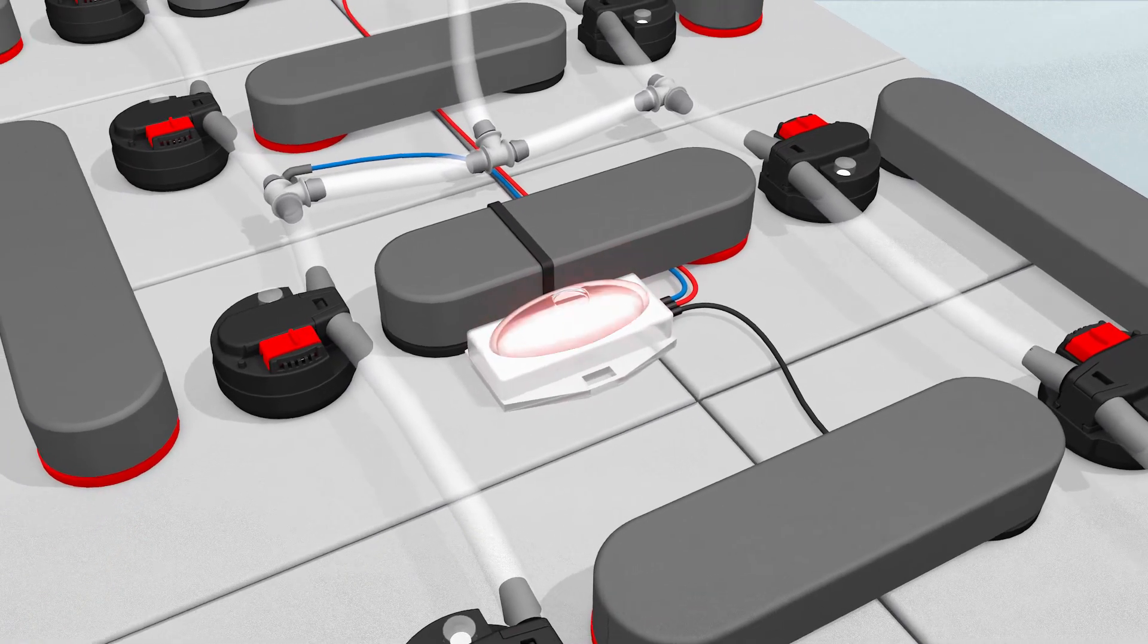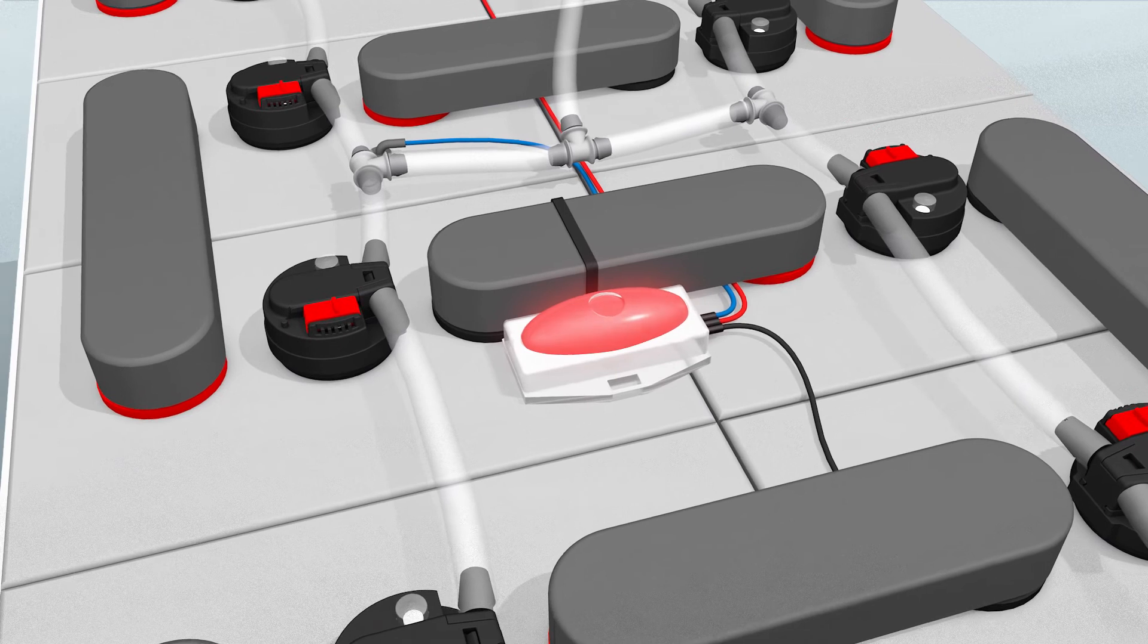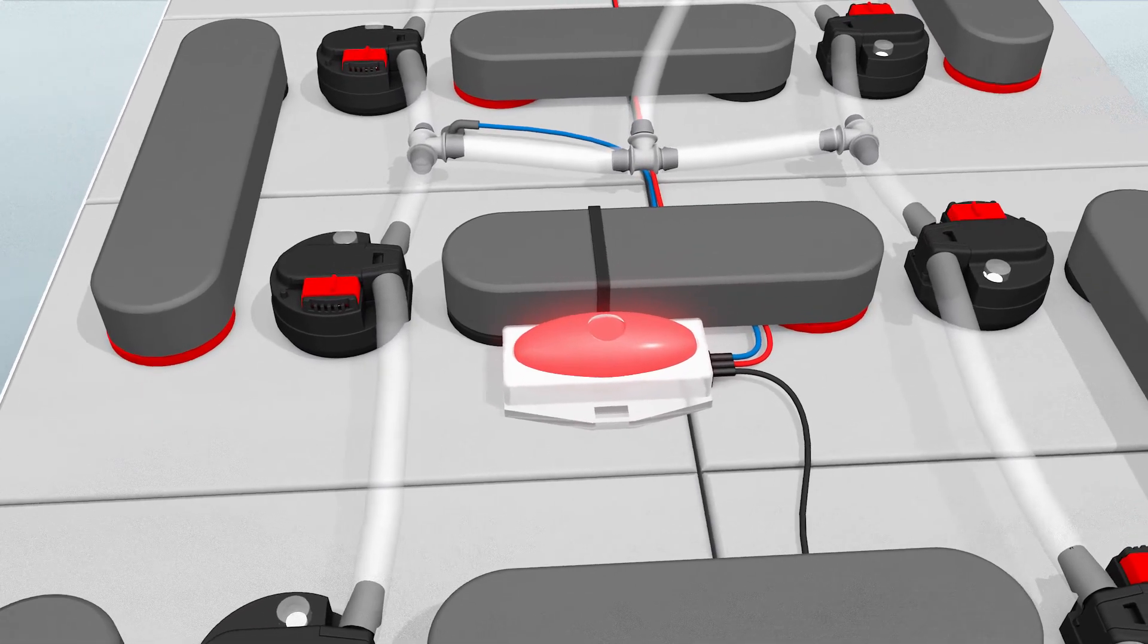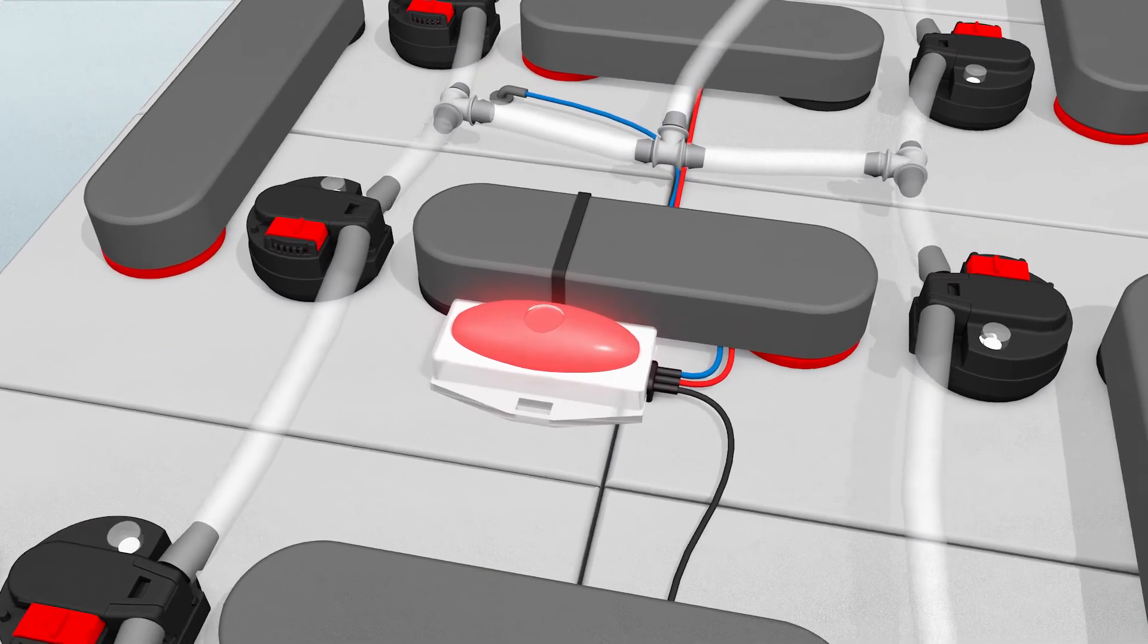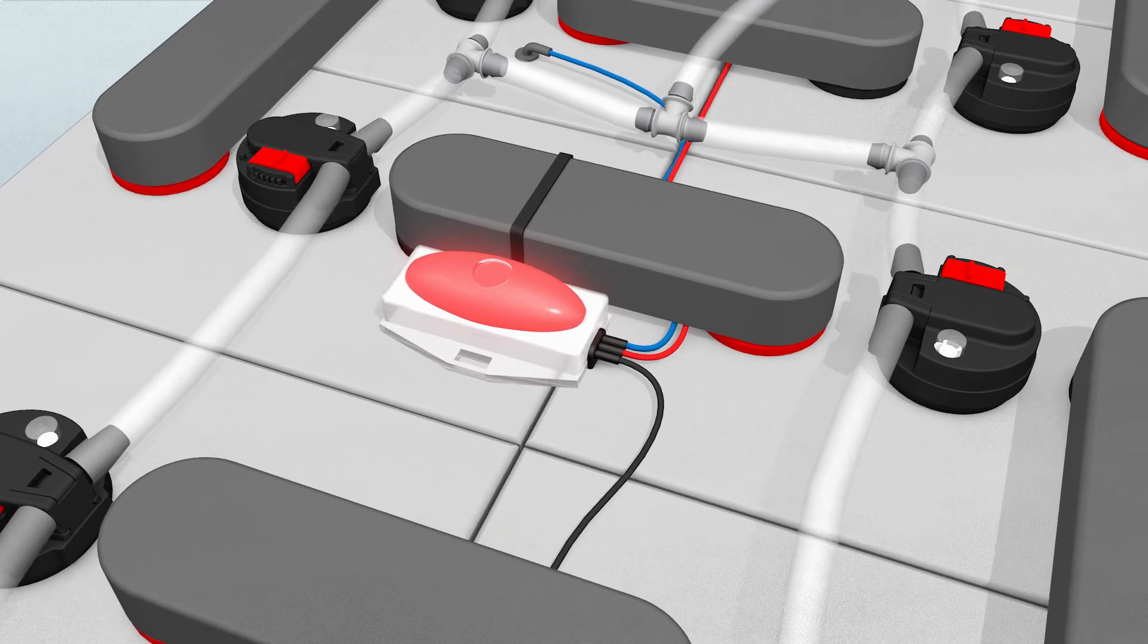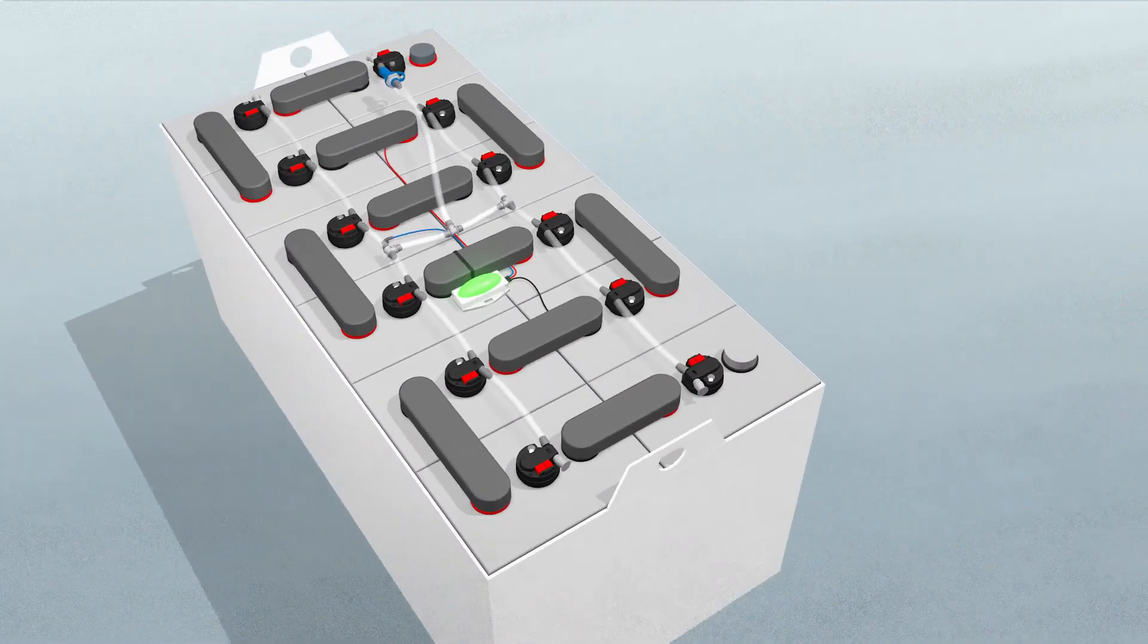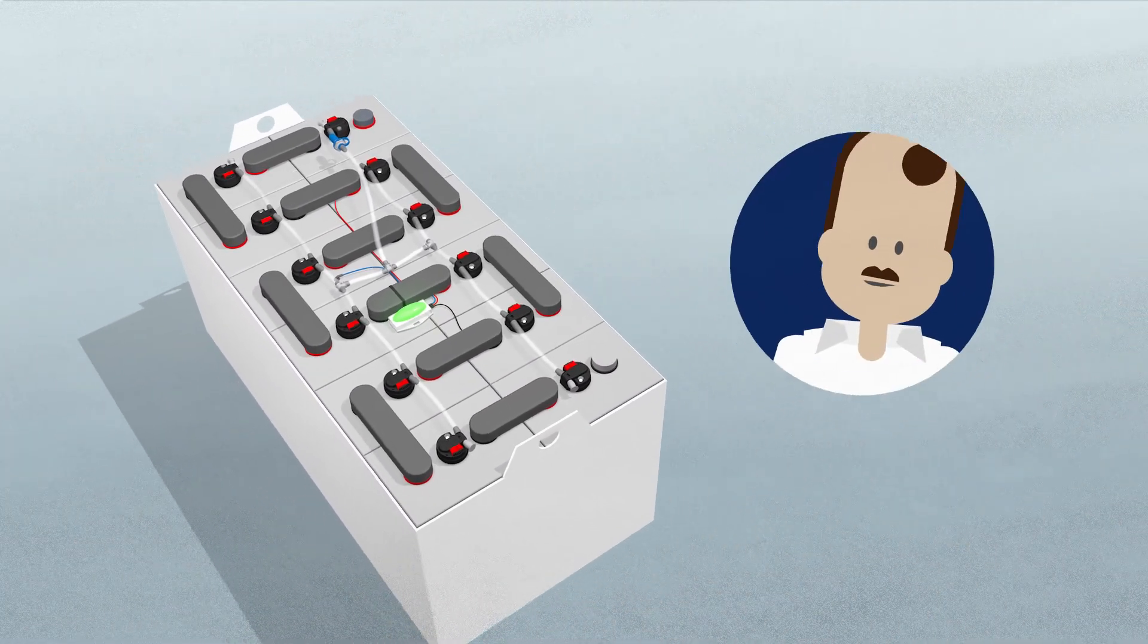If blinking red, you know the battery hasn't cooled. Solid red means it has cooled. Anytime the light is red, blinking or solid, you can water the battery. The light is easy to see, so at a glance, this guy knows the job is getting done.